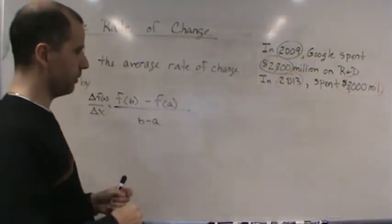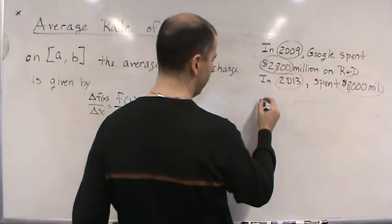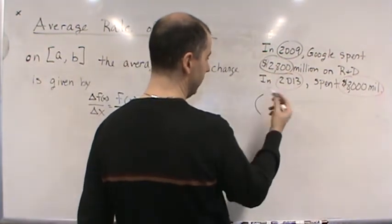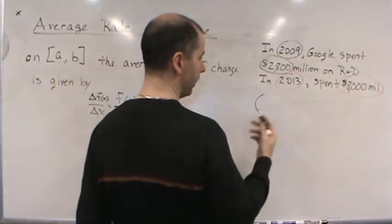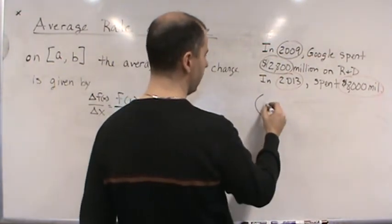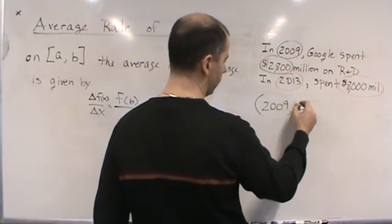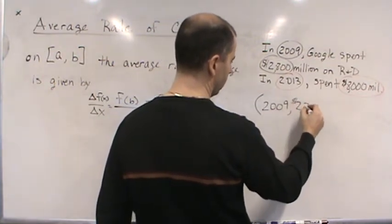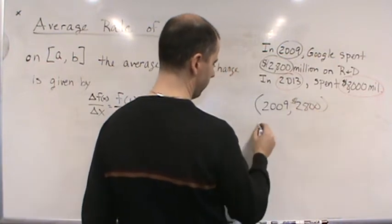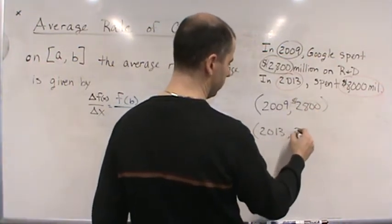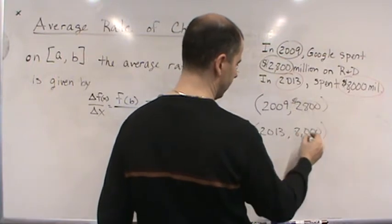The first thing to recognize is that we've got two ordered pairs that relate year with money spent on R&D: 2009 goes with 2800, and 2013 goes with 8000, in millions.